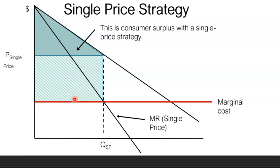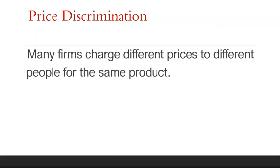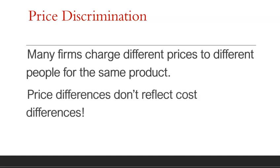Fixed costs are costs that don't vary with the amount that the firm is producing. Now let's classify some different types of price discrimination. The whole idea of discrimination is to charge different prices to different people. It's very important to realize that these are different prices for exactly the same product — in other words, the price differences don't reflect cost differences. Just spend a minute thinking of some examples in which different people pay different prices for exactly the same thing.